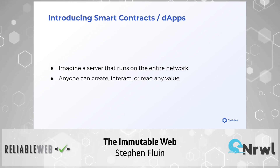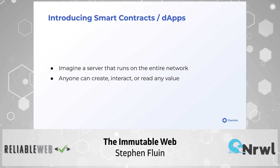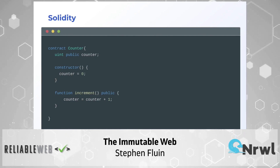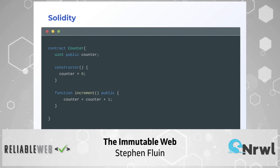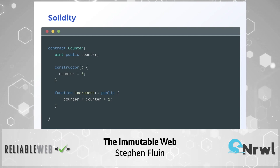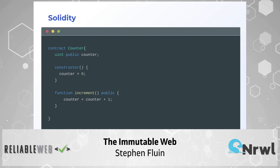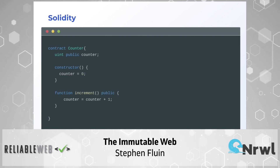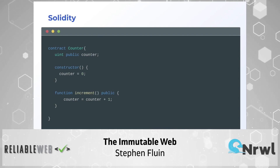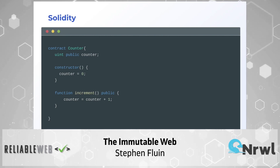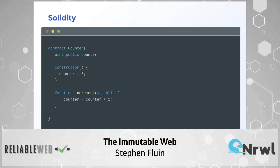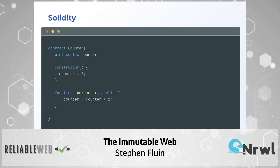When you look at smart contract code, it's not that different from a normal object-oriented programming language. This is a contract written in Solidity — the language most developers use, built by the folks working on Ethereum. Instead of an object with a counter, you have a contract that's a counter. We declare a public variable called counter, construct it and set counter equal to zero. Anytime someone calls the increment method, the counter increases by one. This object exists on the blockchain — and anyone can increment that counter or read that value because there are no access controls. It works at massive scale with ensured consistency.